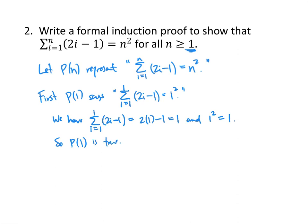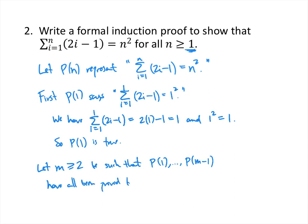We work a little harder for the base case here, but it's still not too bad. For the induction step, we write: let m greater than or equal to 2 be such that P of 1 through P of m minus 1 have all been proved to be true. Our goal now is to prove P of m.